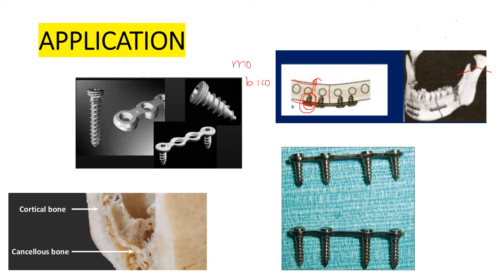Regarding the screws and plates used: when Champhy introduced this technique, he was using stainless steel ones, but now titanium are also available. You place the plate and fix it with the screws. The length of the screw is 7 mm and the width is 1.5 mm — it should be at least 5 mm. If the mandible is thick, you use a longer screw. The plates are available in various sizes and shapes.